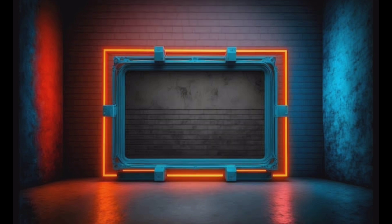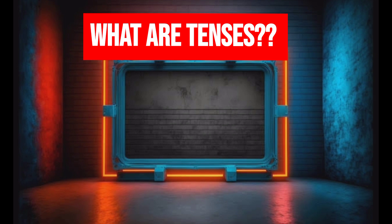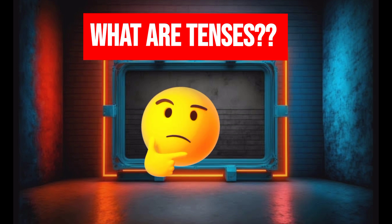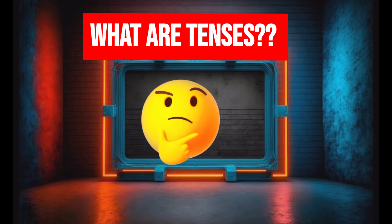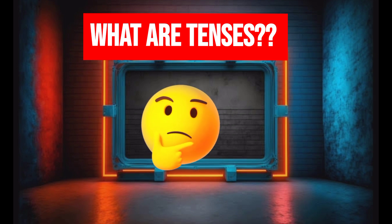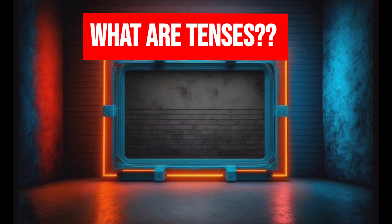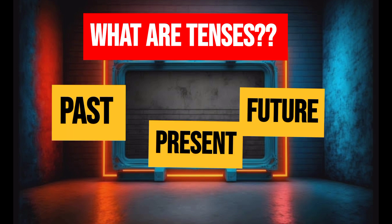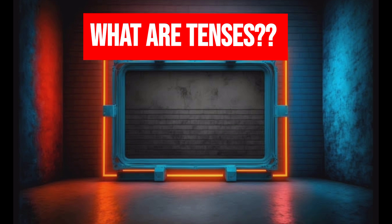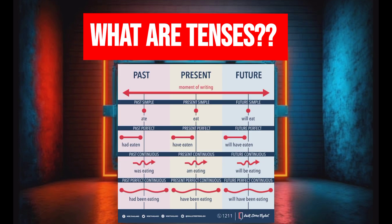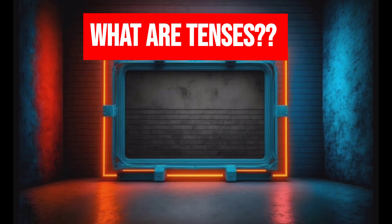First, what are tenses? Tenses indicate when an action took place — past, present, or future. They are like a timeline for your sentences.